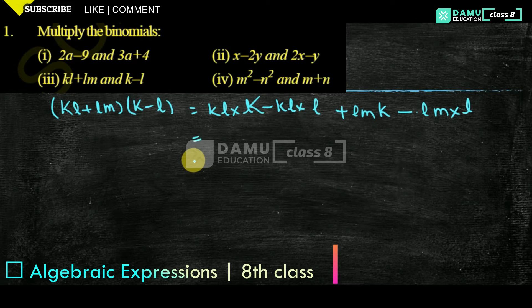So let us take: k into k is k squared, into l gives k squared l, minus l squared into k gives minus kl squared, plus lm·k minus l squared m.